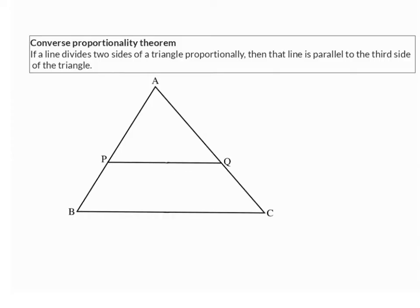Once again, we can identify an if and a then part in this theorem. If we draw line PQ in such a way that it divides the side on the left — AP/PB — into the same ratio as the side on the right,